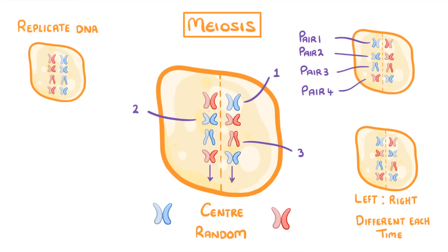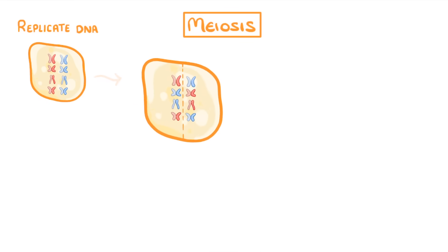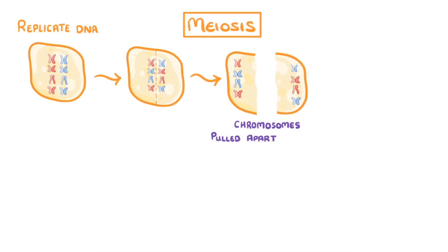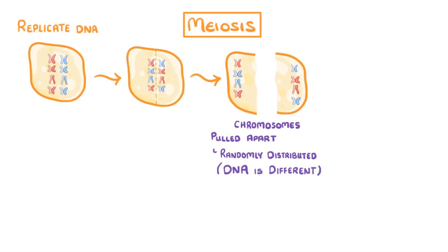This point is actually really important, because it means that in the next stage, when the chromosome pairs are pulled apart and the whole cell splits in two, the chromosomes are going to be randomly distributed — with each half of the split cell getting a different combination of maternal and paternal chromosomes, which means the DNA in each of those two cells is going to be different. So far we've doubled all of the DNA and undergone the first division.